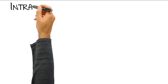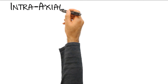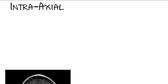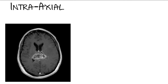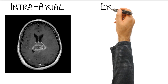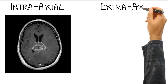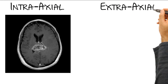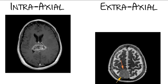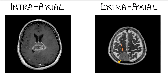When we study an intracranial mass, the first thing we want to know is whether the mass lies inside or outside of the brain. Intraaxial tumors are located within the brain tissue and arise from the brain cells, while extraaxial tumors are located outside the brain and arise from structures lining or surrounding it.